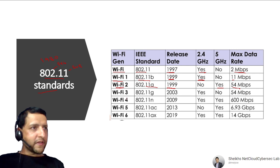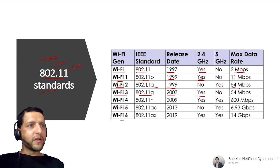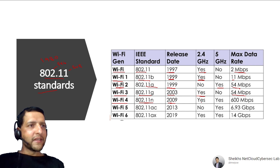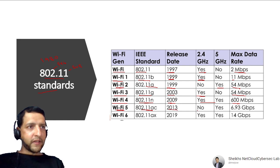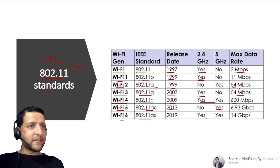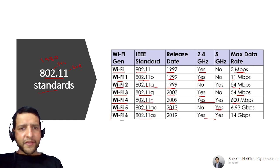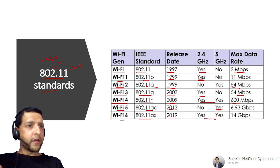Wi-Fi 3 is 802.11g, released in 2003, works at 2.4 GHz at 54 Mbps. Wi-Fi 4 is 802.11n, started in 2009, works with both 2.4 and 5 GHz frequencies — the most popular standard — with a speed of 600 Mbps. Wi-Fi 5 is 802.11ac, started in 2013, works at 5 GHz at 6.93 Gbps. Wi-Fi 6 is 802.11ax, started in 2019, works on both frequencies at 14 Gbps. These speeds may be theoretical but are what you need to remember for exams.